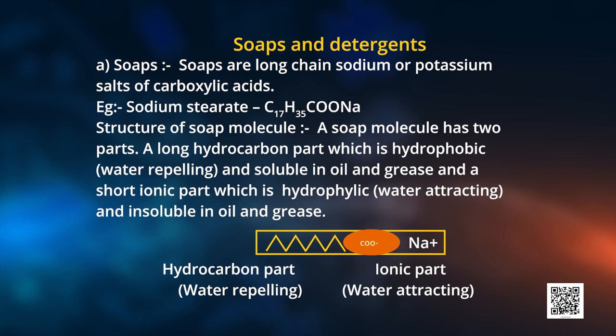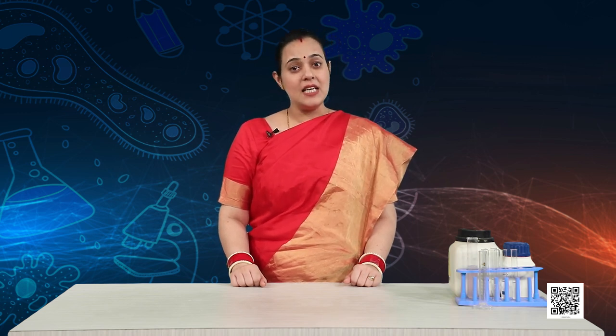You need to understand the structure of soap. A soap molecule has two parts. The first part is the hydrocarbon part, known as hydrophobic or water-repelling — the zigzag line on the screen represents this hydrophobic part, which is water-repelling but soluble in oil. The second part is the ionic part, also known as the hydrophilic or water-attracting part, which is insoluble in oil.